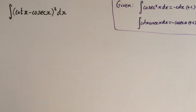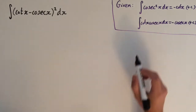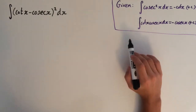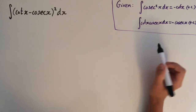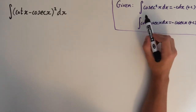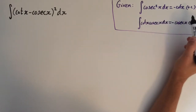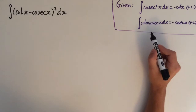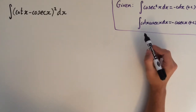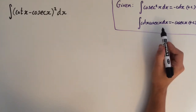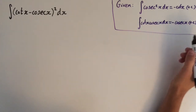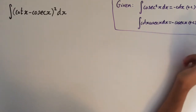In this video I'm going to show how to find the integral of cot x minus cos x, all squared. I've written down some standard integrals that we're going to need to use. The integral of cot x squared is minus cot x, and the integral of cos x is just minus cos x.